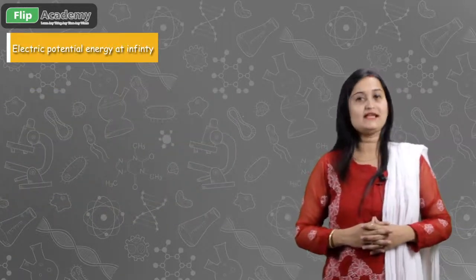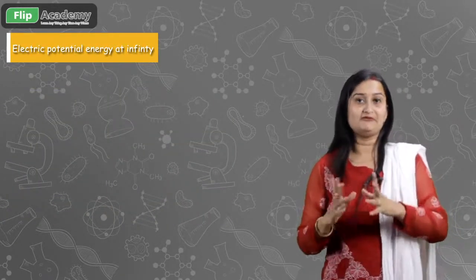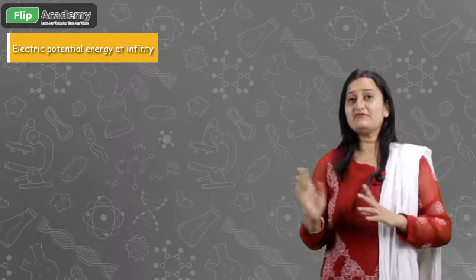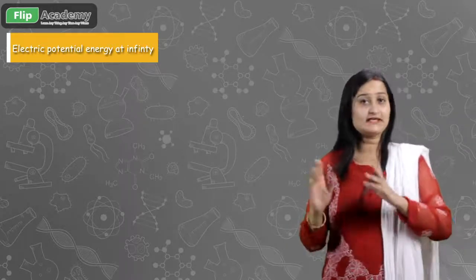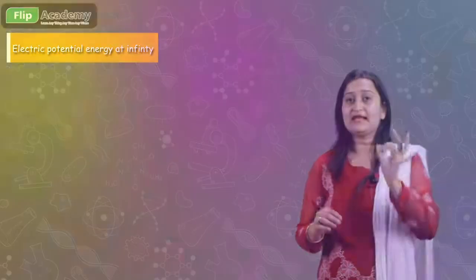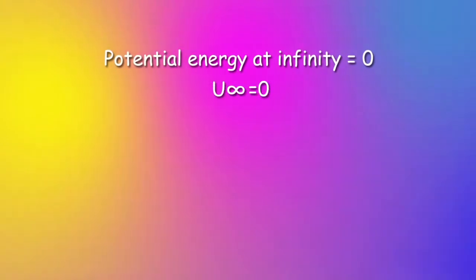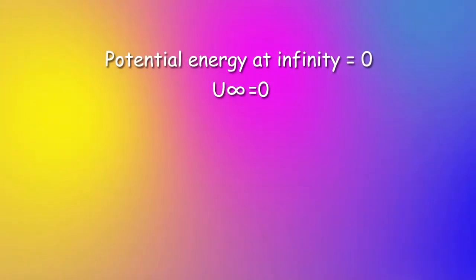When we talk about electric potential energy at infinity, we say there is zero amount of energy — that is, U at infinity equals zero.